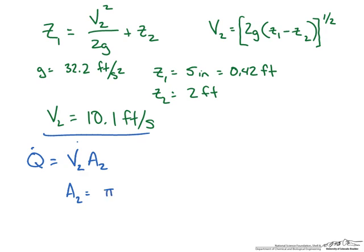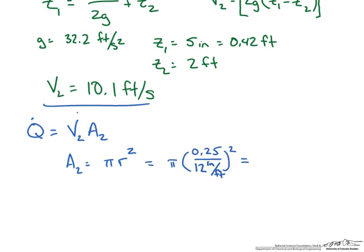We will assume a circular opening as pi r squared. This is going to be equal to the radius which is point two five inches and we are going to convert this into feet since our velocity is in feet per second. Which gives us the following cross sectional area.